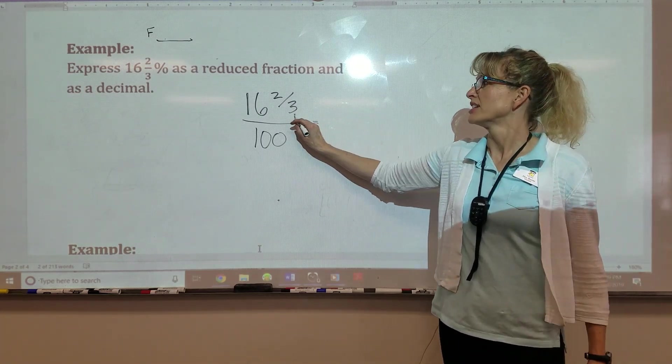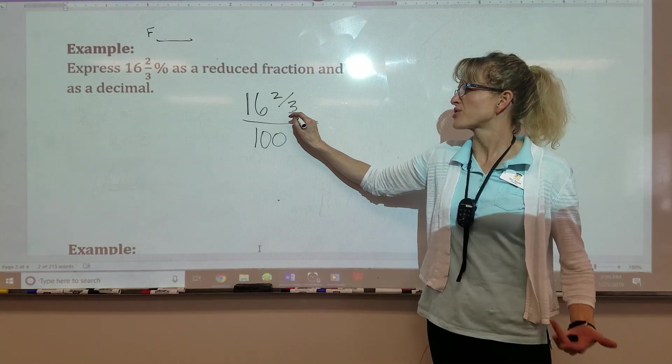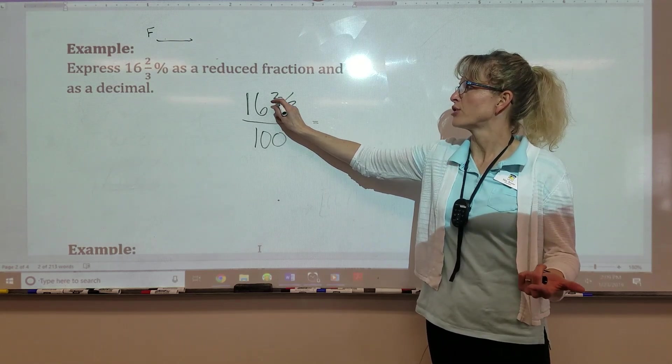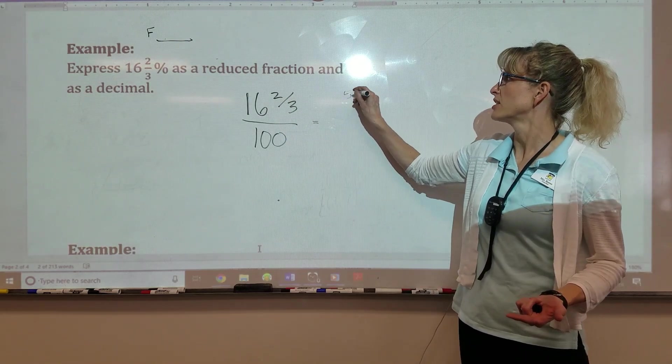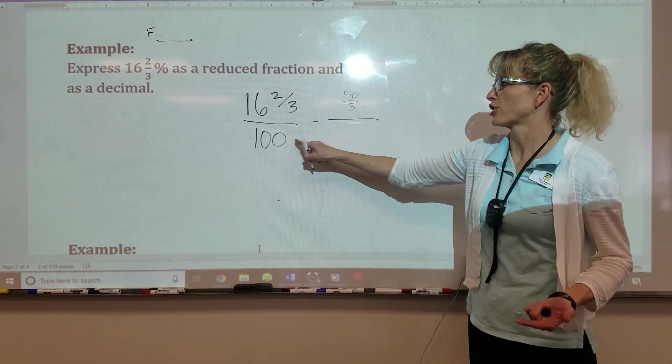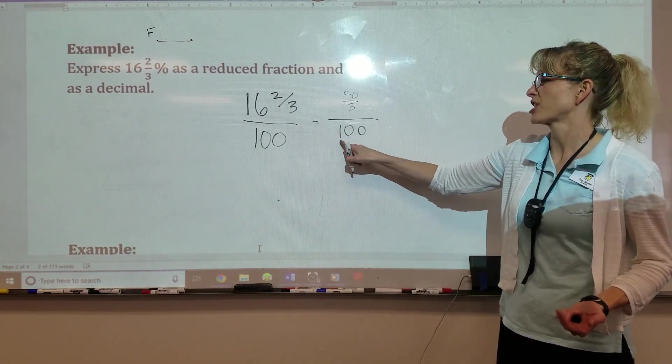And I'm going to change it into an improper fraction. An improper fraction. So remember this. You do the denominator times the whole number, and then you add on the two. That's going to be 50 over 3. I still have the 100. A lot of kids this morning were forgetting their 100.